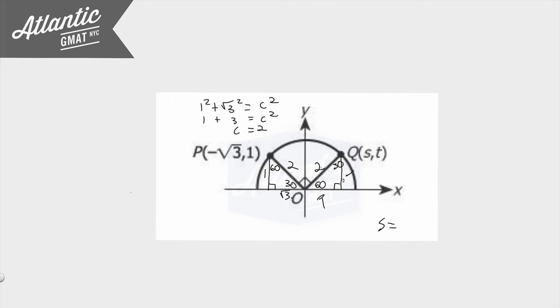Now that we know this, we can figure out this and this, because this is also a 30-60-90. So opposite 30 is 1 and opposite 60 is root 3. The base goes out to that point Q, so the x coordinate or s is just going to be 1.